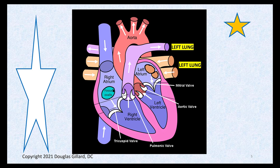Once you're born, the foramen ovale closes and becomes the fossa ovalis. Talking about the adult heart: deoxygenated blood enters the right atrium, goes through the tricuspid valve into the right ventricle. Ventricular systole occurs, shoots the blood up the pulmonary trunk - sometimes called just the pulmonary artery clinically. The pulmonic valve guards that exit. Blood goes to the lungs, gets oxygenated, comes back through four pulmonary veins into the left atrium.